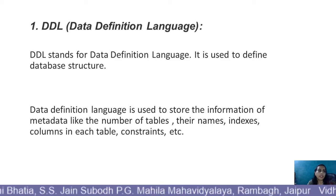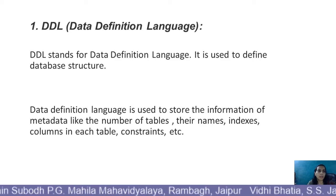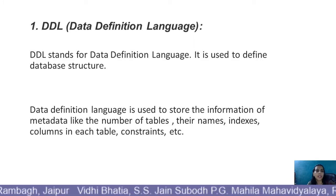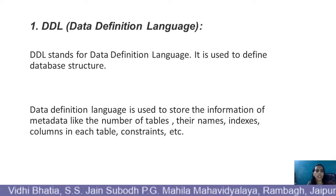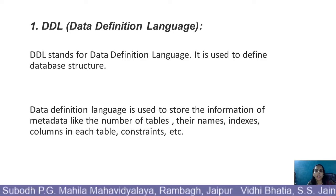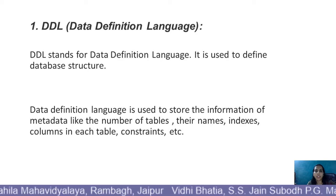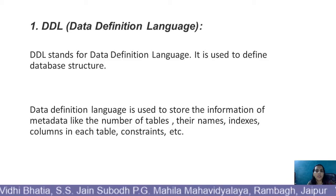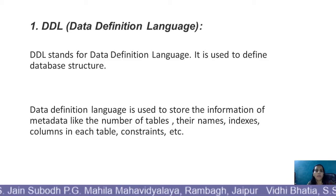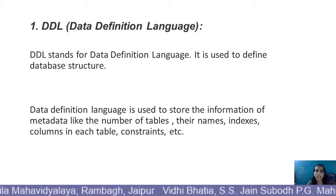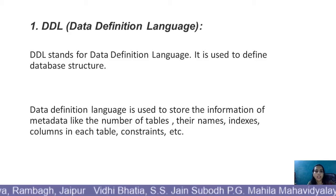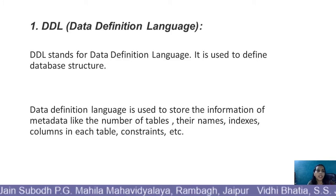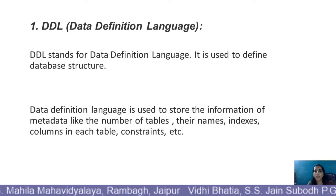DDL — it is used to create tables, indexes, sequences, synonyms, views, or specify constraints in the database. DDL stands for Data Definition Language. It is used to define database structure. Data Definition Language is used to store the information of metadata, like the number of tables, their names, indexes, columns in each table, constants, etc. Basically, it is used to create the skeleton of the database.